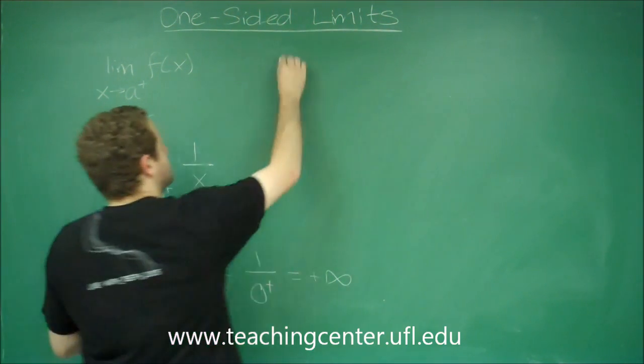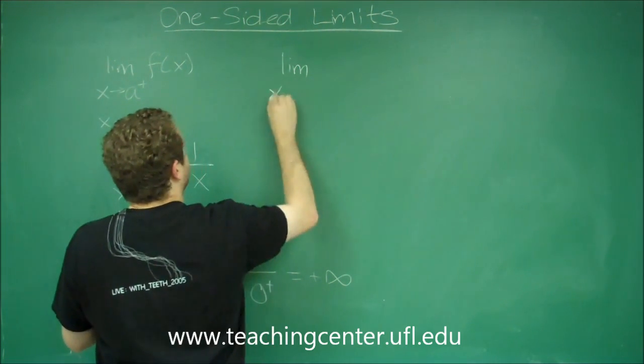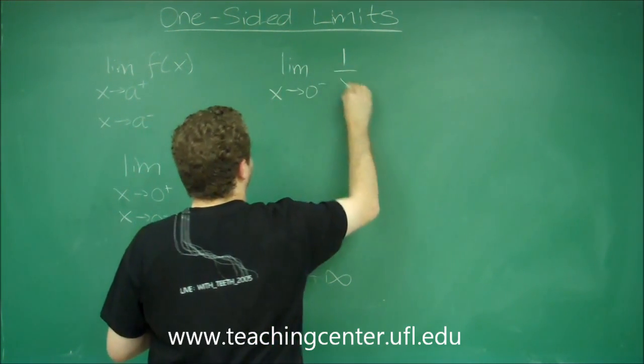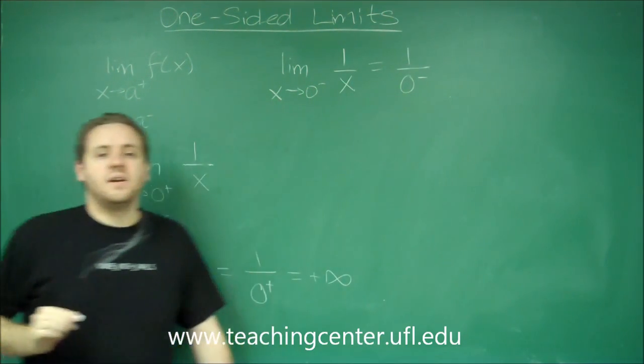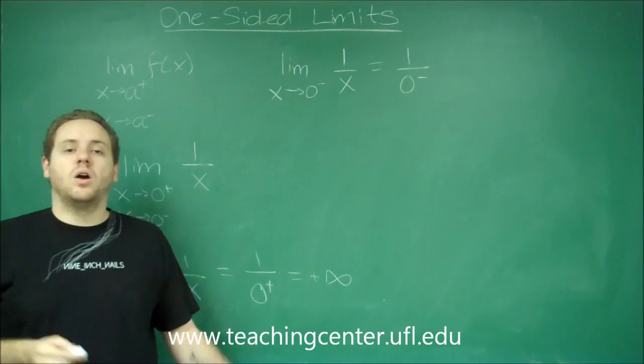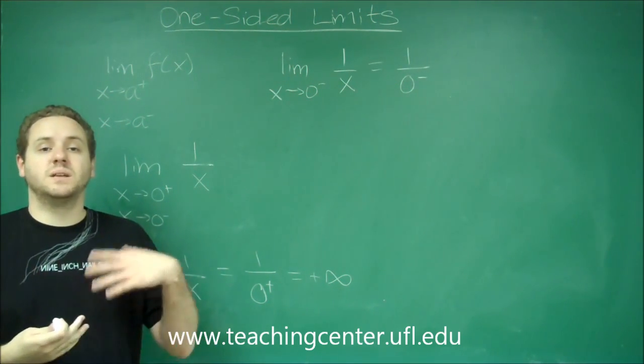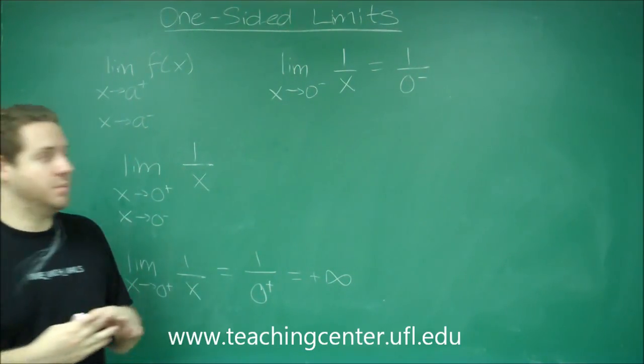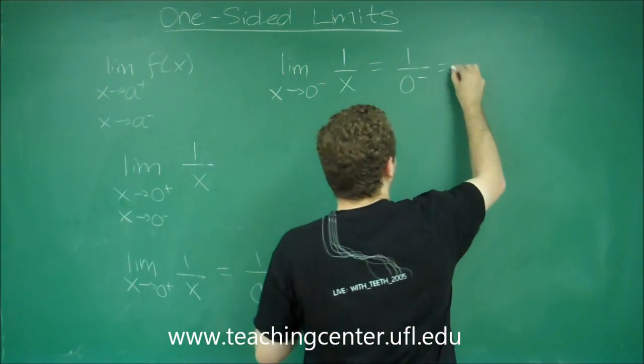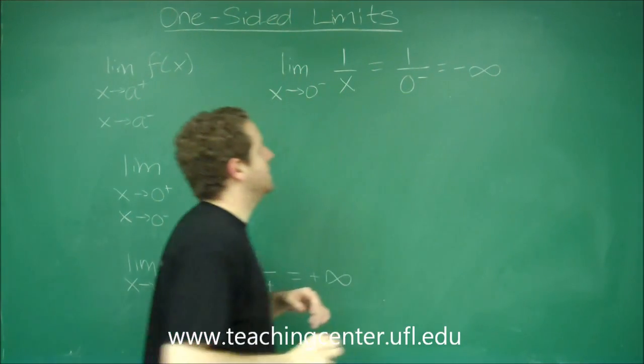From the left, we have almost the same thing going on. But if we have very small negative numbers, our number is still getting very large, except now it's going to be negative because we have one over a negative very small number. And we get negative infinity.